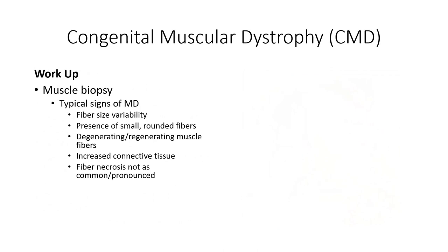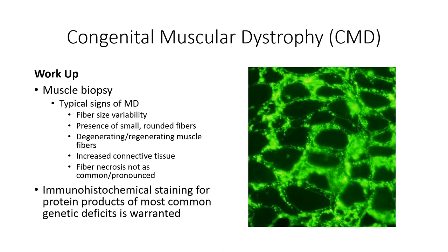Histological workup of the affected tissue will demonstrate similar pathology changes when compared to what is seen with Duchenne and Becker muscular dystrophy. Biopsy samples from CMD patients demonstrate intermingling of small and large fiber sizes, evidence of muscle damage and regeneration through the presence of centralized nuclei, and greater density of connective tissue surrounding the fibers. One notable distinction is a smaller number of unstained necrotic fibers over time. As with limb-girdle muscular dystrophy, immunohistochemical analysis of samples can help in identifying the protein of interest in CMD patients.